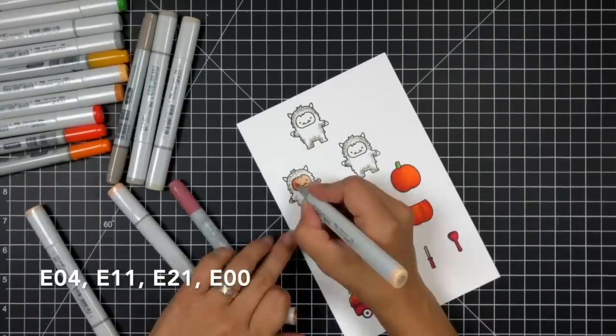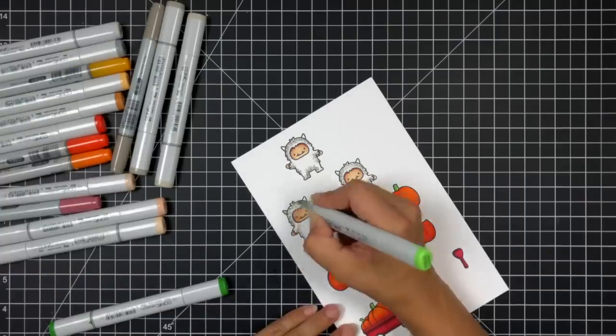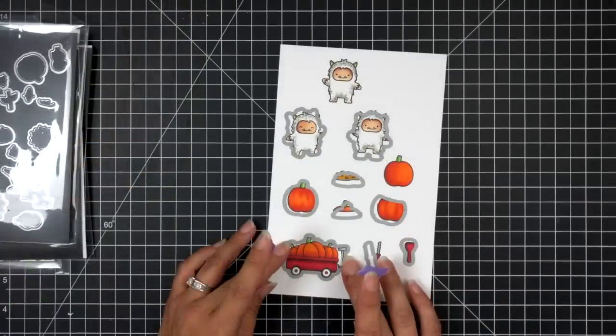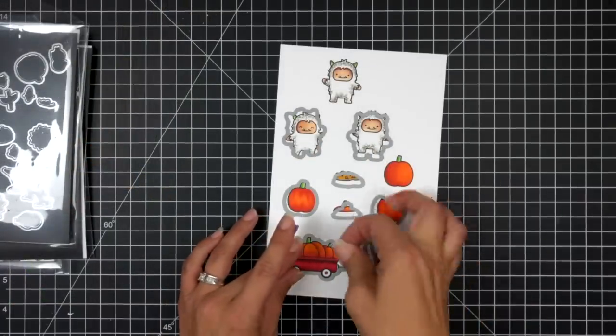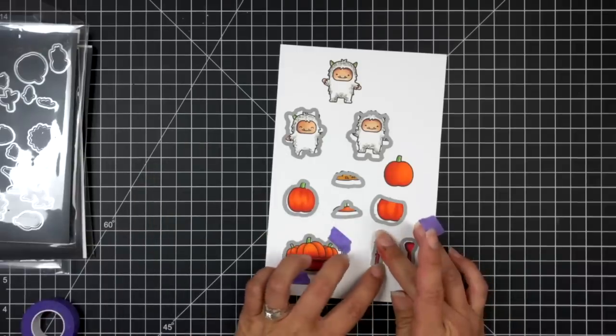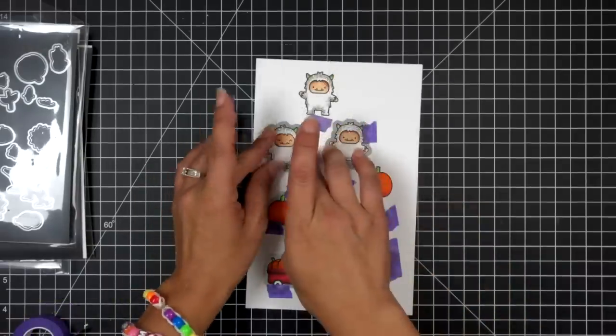Then to tie in some Halloween colors I did give the yeti some green horns which are the same colors I used for my pumpkin stems. Then taking the coordinating dies and holding them in place with some low tack tape I'll go ahead and run this through my die cutting machine.